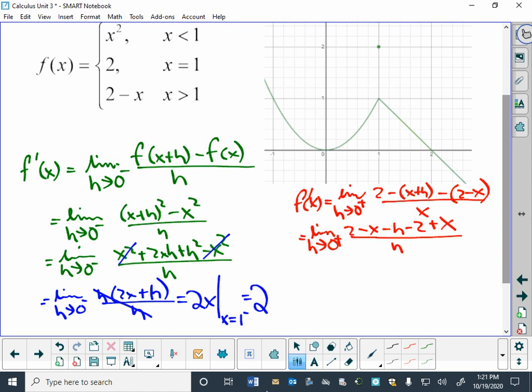And I've got a 2 minus 2, so those make a 0, negative x plus x will always be 0, and I'm just left with a negative h over h.